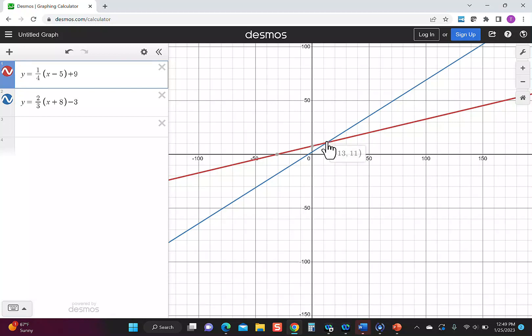So it says (13, 11). What this means is the x value is 13, and when they're equal, the left and right sides would equal 11. You don't really need the 11, you just need the 13—that's the answer to the equation.